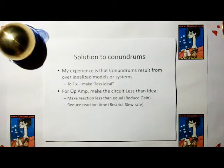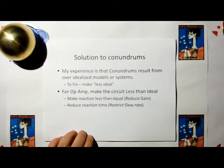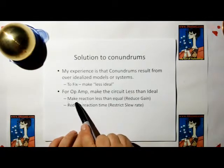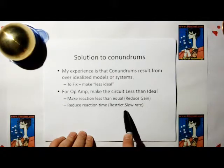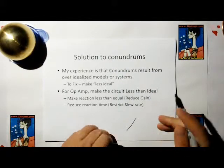So what's the solution to the conundrum? Well, I found in my experience that a conundrum is a result from over-idealized models or systems. So the way to fix a conundrum is to make the system less ideal. For the op-amp, there's two ways to make it less ideal. Either make the reaction less than equal, reduce the gain, or reduce the reaction time, restrict the slew rate. That's what we say the slew rate is the rate at which the output can change.